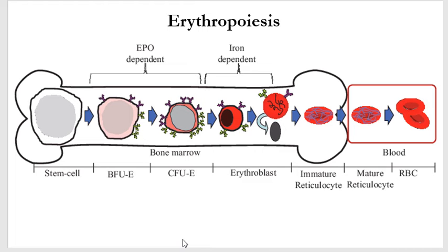Looking at erythropoiesis, which is simply how red blood cells are made. What we have on the screen is a bone, and we're looking at the bone marrow. Where we started off was we had a stem cell, which then gave us the myeloid progenitor cell.